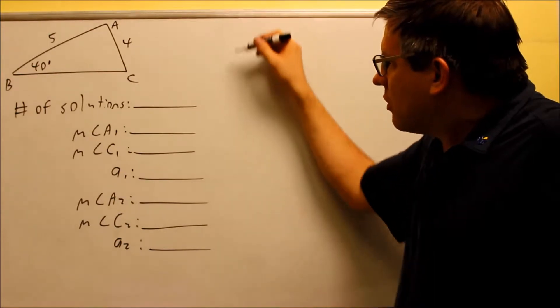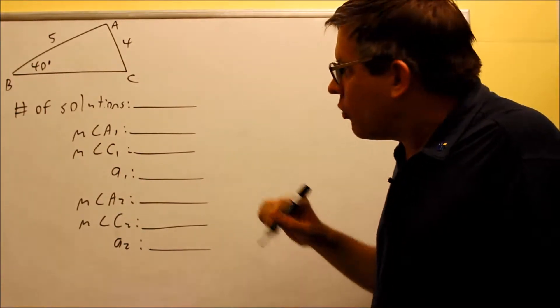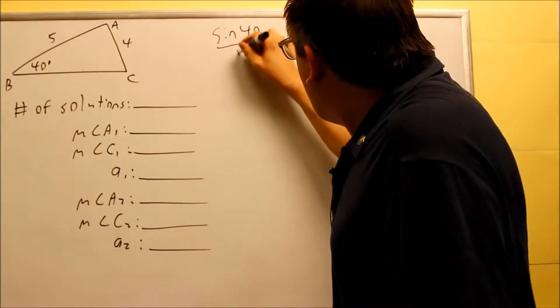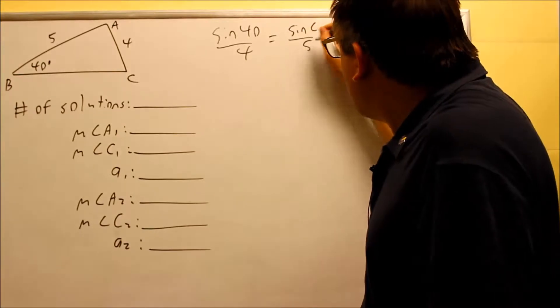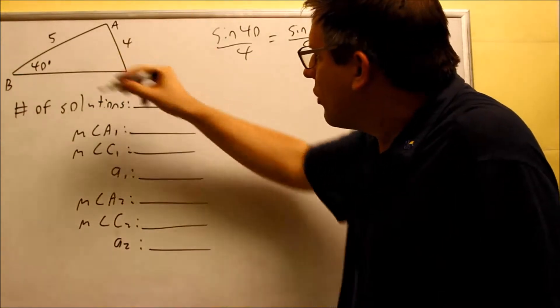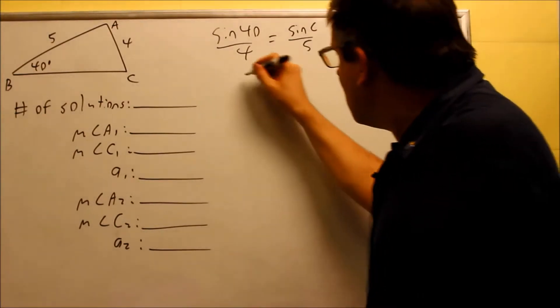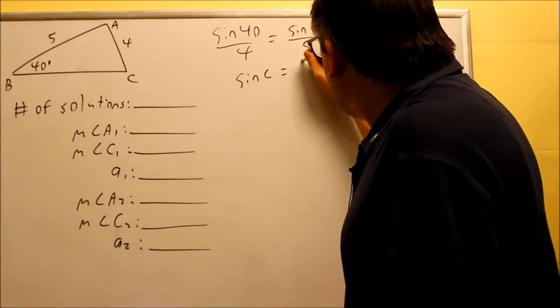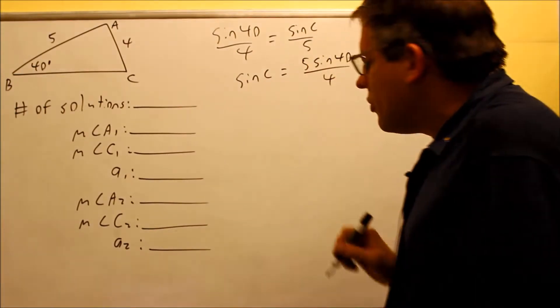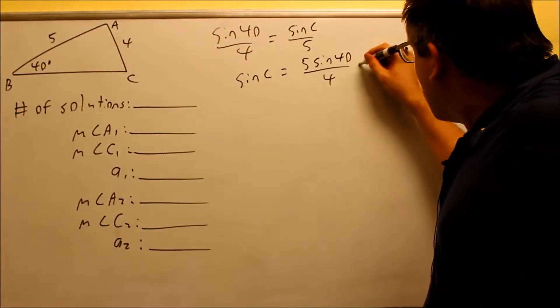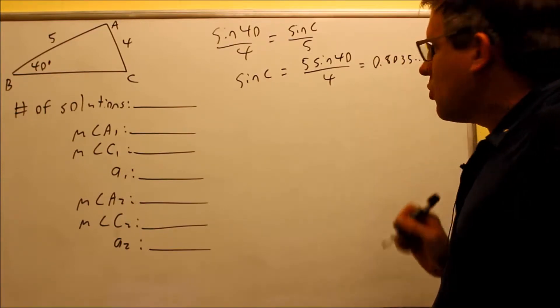Let's start by seeing how many solutions this one's going to have by setting up our known ratio. We're going to do sine 40 over 4 equals sine C over 5. We have to solve for C first because we don't have enough information to solve for A. So sine C is going to be 5 sine 40 over 4, and that decimal in the calculator is 0.8035.